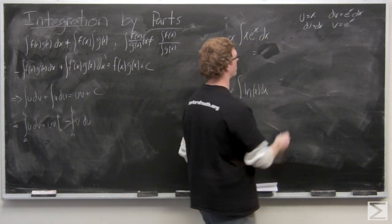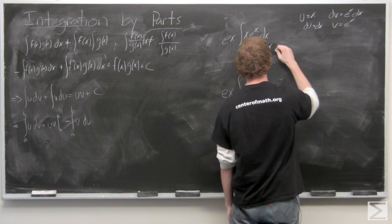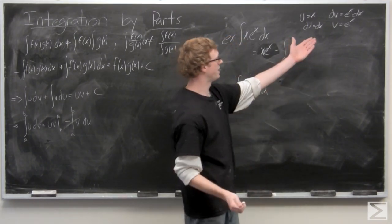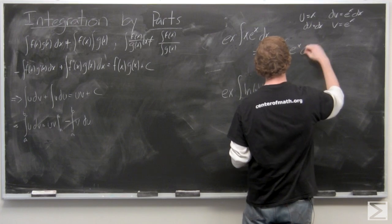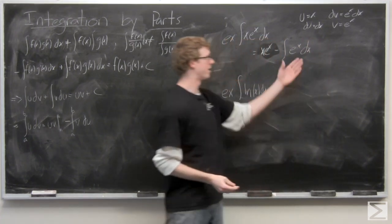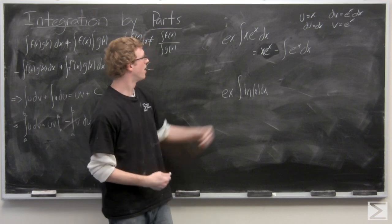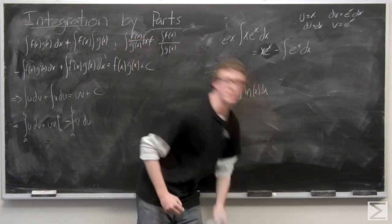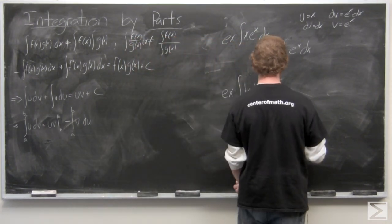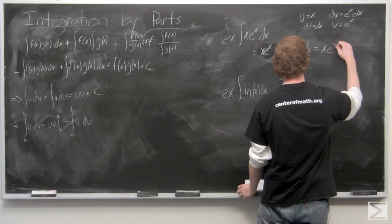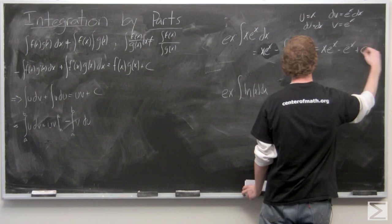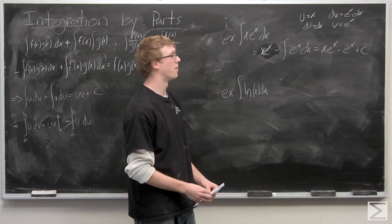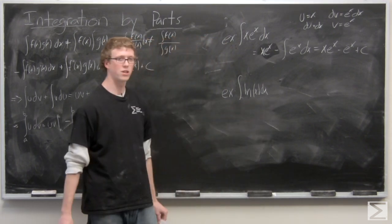So u times v is just x·eˣ, and then we have the integral of v du, which is eˣ dx. The antiderivative of eˣ is eˣ again. Since we don't have bounds of integration, we add a plus C at the end. Now let's take a look at another function — the natural log of x — where we don't know how to take the antiderivative directly.